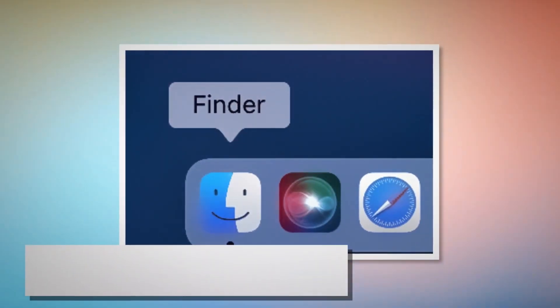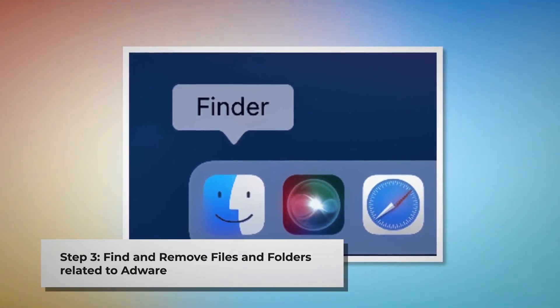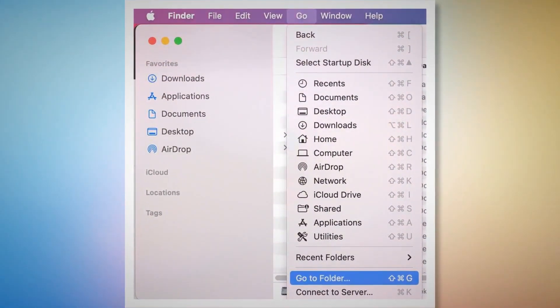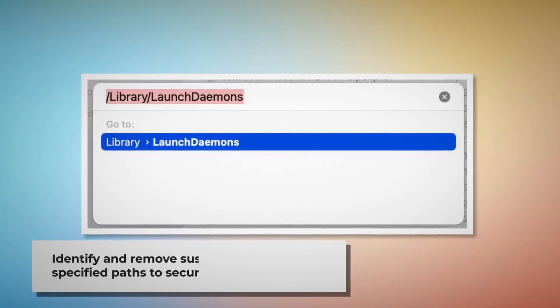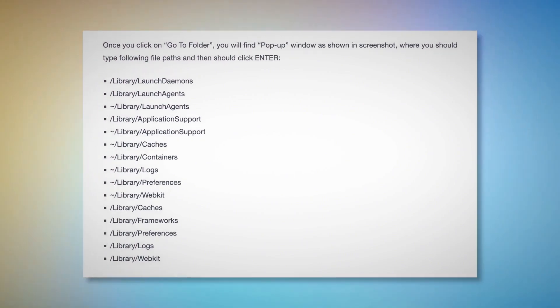Step 3: Find and Remove Files and Folders Related to Adware. First, make sure you are in the Finder folder. If not, follow the steps mentioned in Step 2 to go to the Finder folder. Once you are in the Finder folder, click on Go at the top menu bar of your Mac and then Go to Folder on the drop-down menu, as shown in the screenshot. Once you click on Go to Folder, a pop-up window will appear where you should type these file paths and click Enter — such as Library, LaunchDaemons, LaunchAgents, Application Support, and so on, as shown here. You should look for suspicious or malicious files and move them to trash. A few examples of such malicious files are shown here.